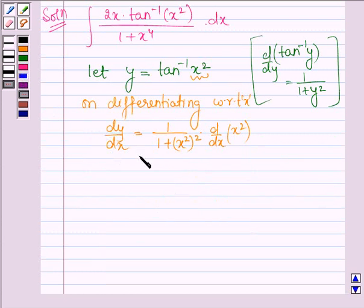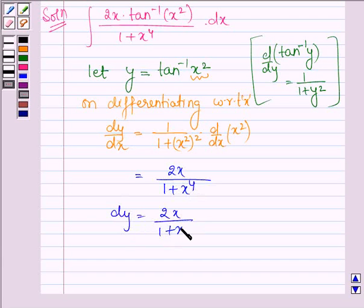And this is equal to 2x divided by 1 plus x raised to the power 4. Therefore, dy is equal to 2x divided by 1 plus x raised to the power 4 into dx.